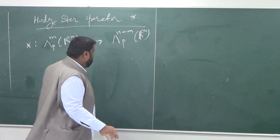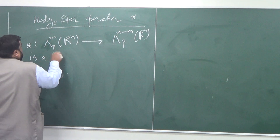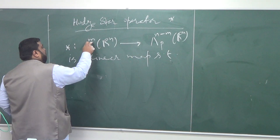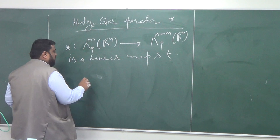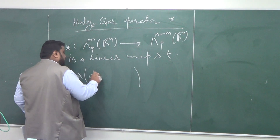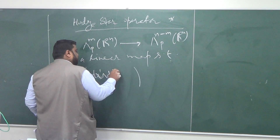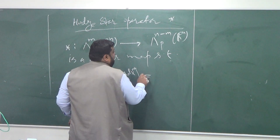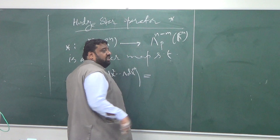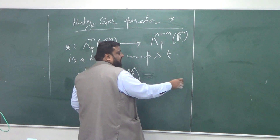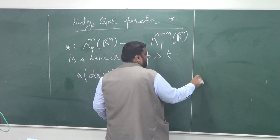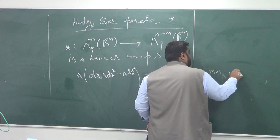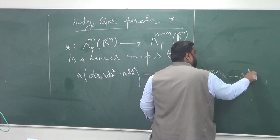So star is a linear map such that the basis element of M-forms looks like dx1 wedge dx2 wedge ... wedge dxM. And as a result I want to get an element which is in the basis of the complementary space — namely dxM+1 wedge ... wedge dxN.